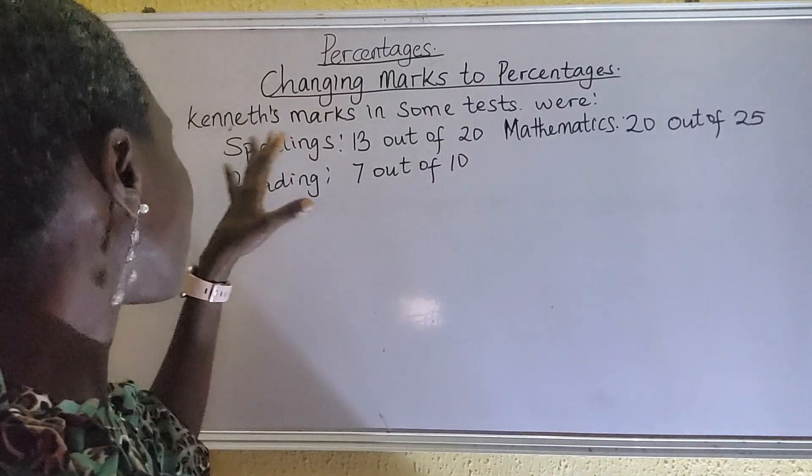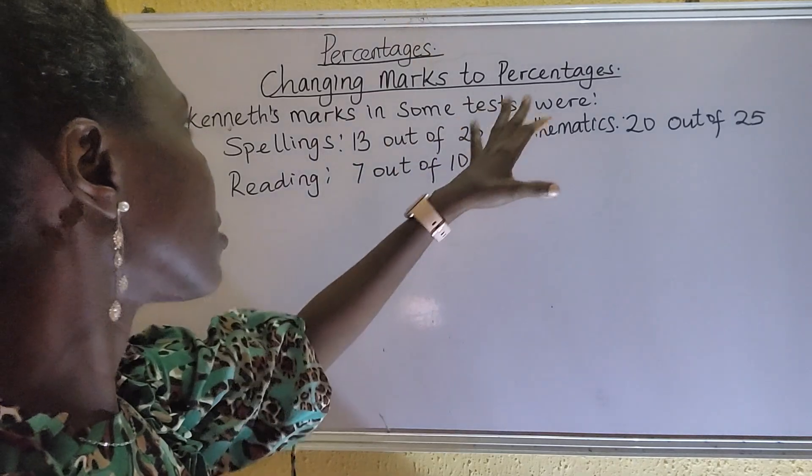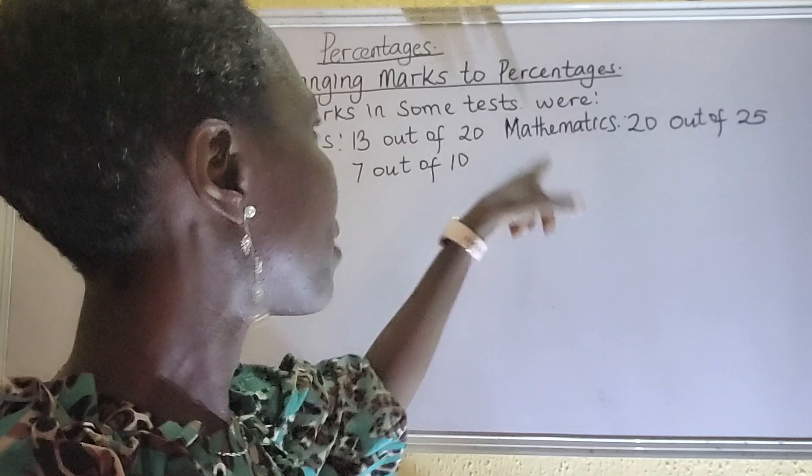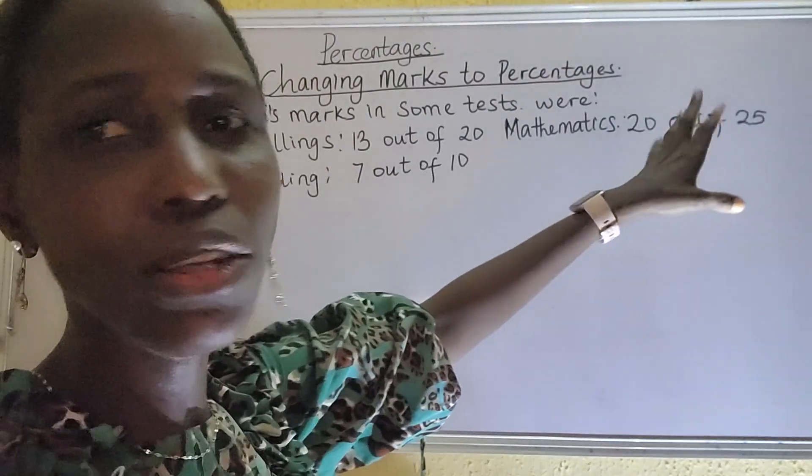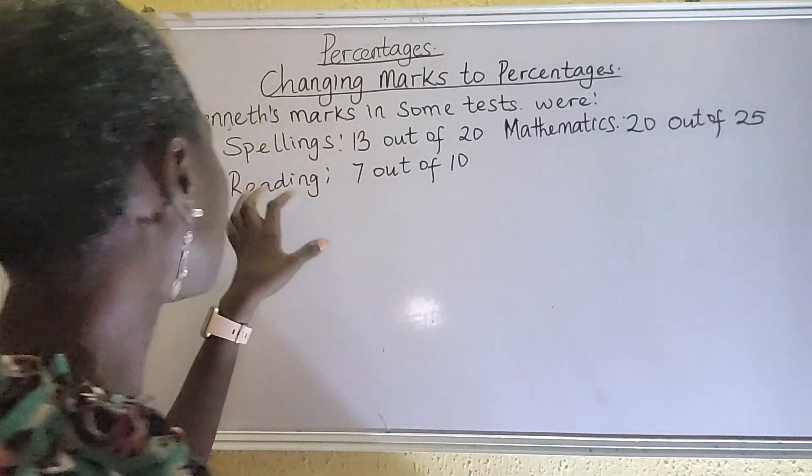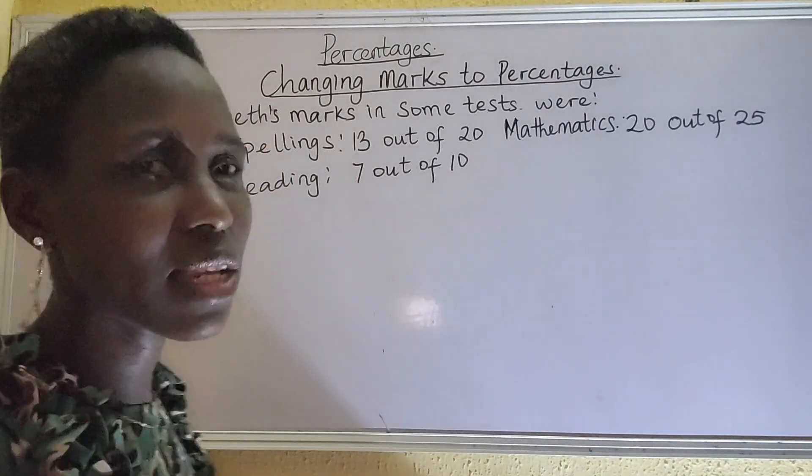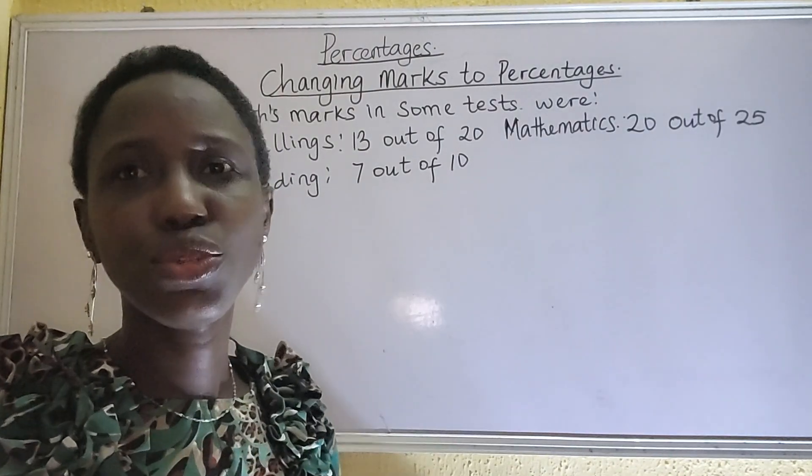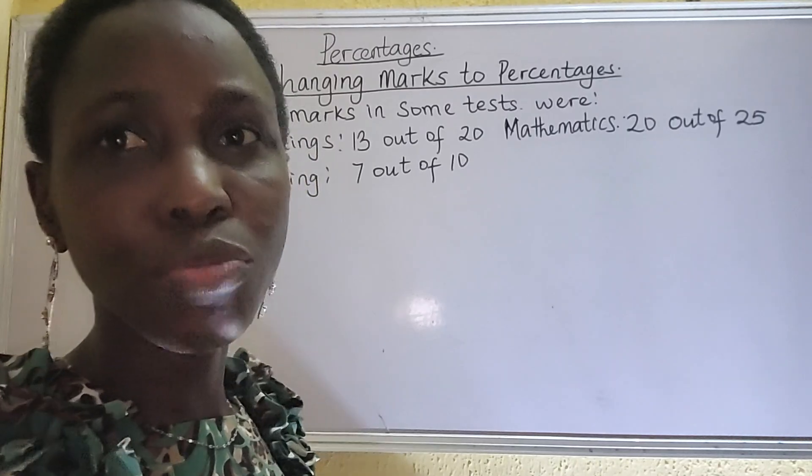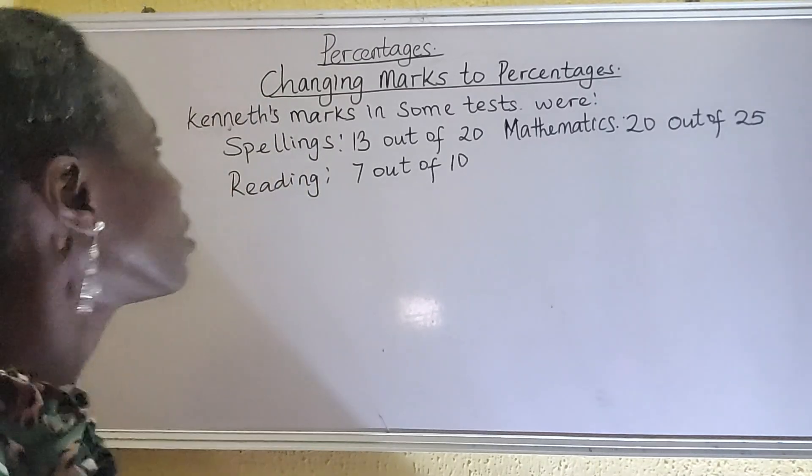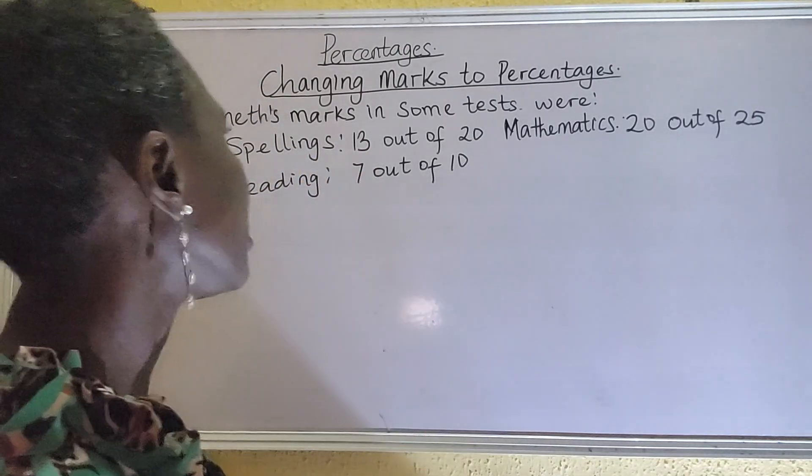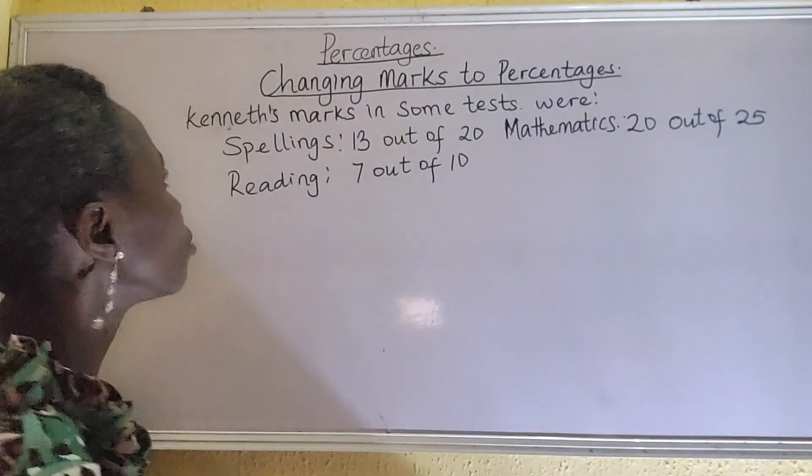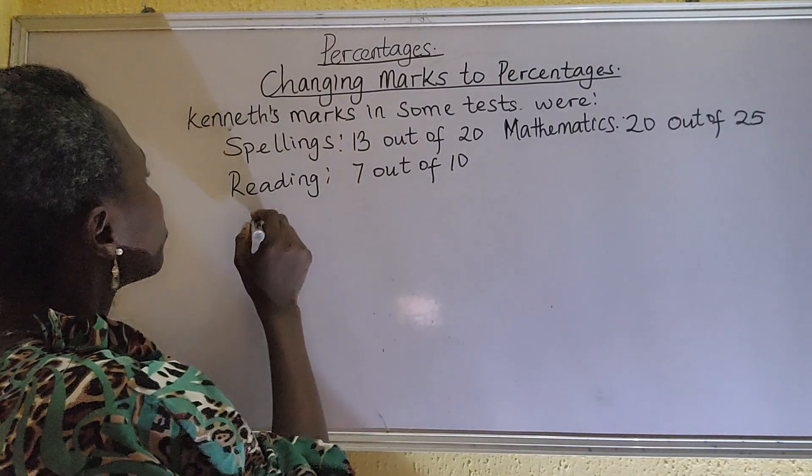Talking about Kenneth. He had some marks in his test. In spellings, he got 13 out of 20. Mathematics, he got 20 out of 25. And in reading, he got 7 out of 10. We are going to see what percentage. We are changing it to percentage. This is fraction already, 13 out of 20. So let's quickly get all of this changed to percentage.